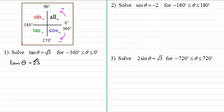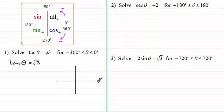I'm often asked why isn't it plus or minus? Well, there's no plus or minus there — we're just taking the positive value. So if we draw a Quadrant Diagram, where is tan of an angle positive? It's in the first quadrant where all are positive, and in the third quadrant where tan is positive.